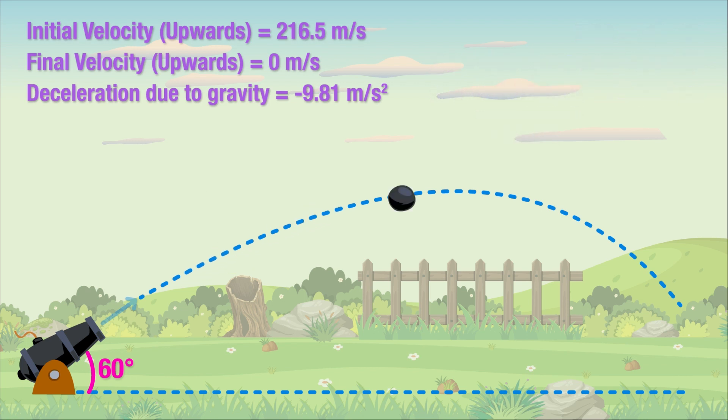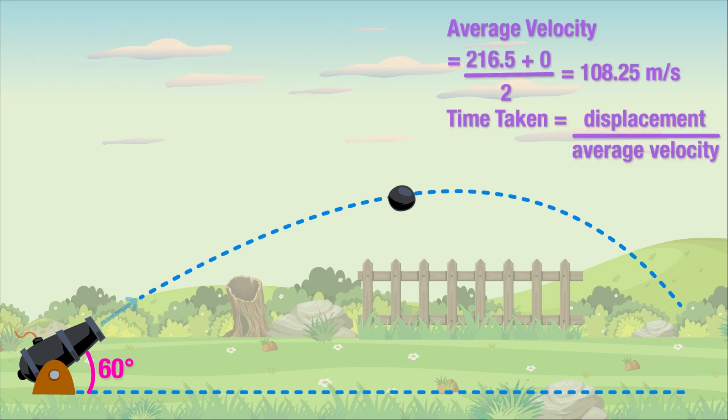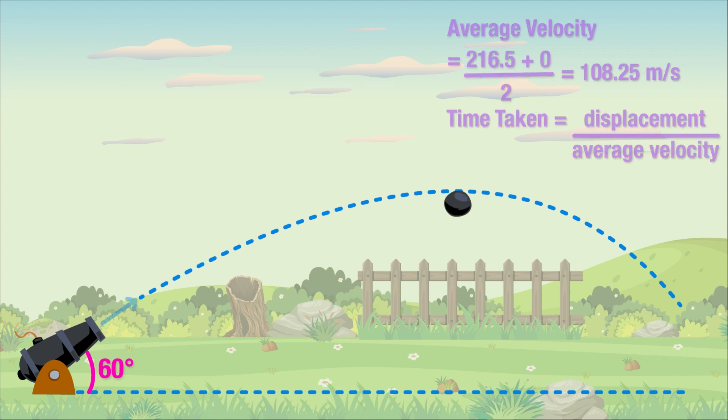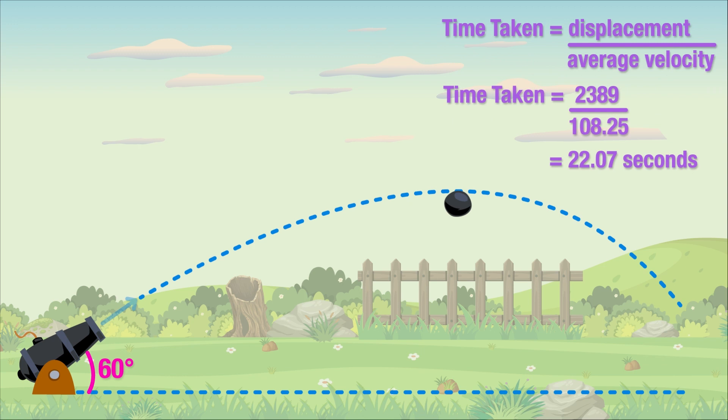This is the value we plug into the displacement time velocity relationship to find the time taken to reach this point. If you remember correctly, we need the average velocity for this. The average velocity will be the average between 216.5 and 0, which comes out to be 108.25 meters per second. Plugging this into the formula, we get something like this. Our answer comes out to be 22.07 seconds.